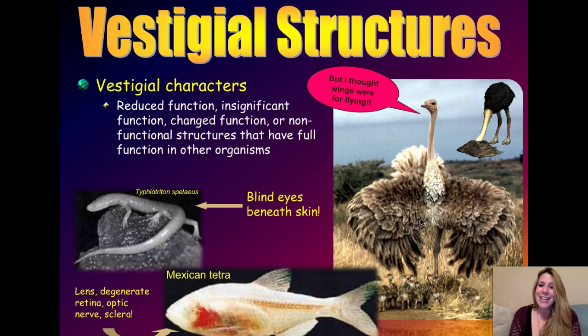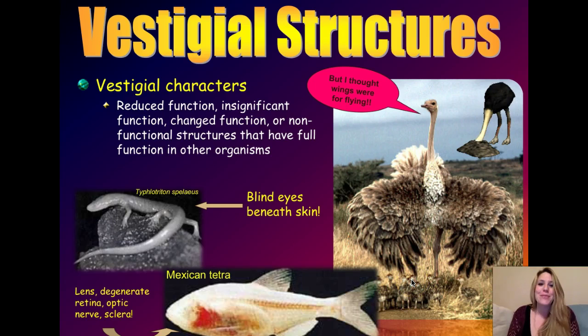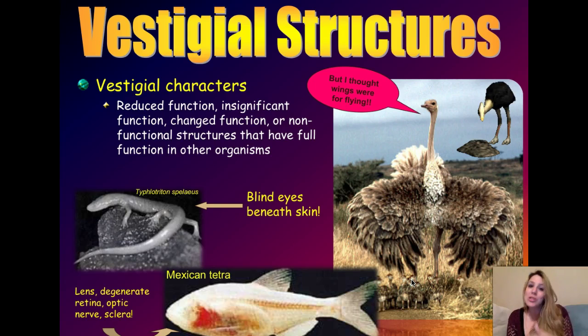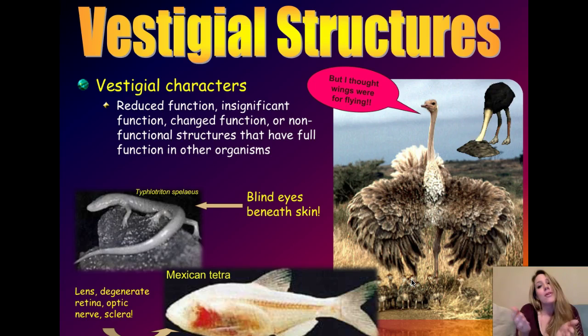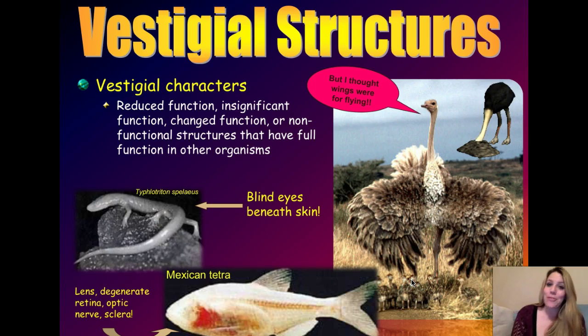A very common example is the ostrich. This guy lives in Africa and is the largest living bird today. She has huge wings that she's using to shade her little babies from the sun. We usually think of wings in a bird as being structures for flying. Based on DNA evidence and other evidence, we know that ostriches are actually descended from flying birds. So their wings are vestigial — they have lost their function and now have an altered purpose of shade and probably balance as well.